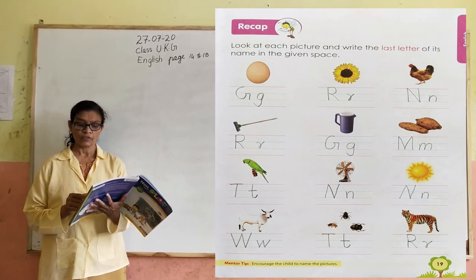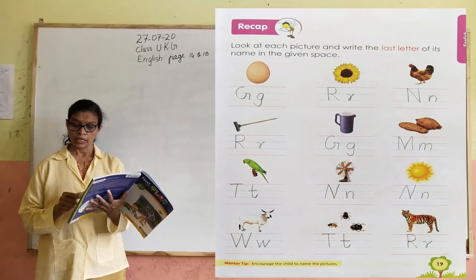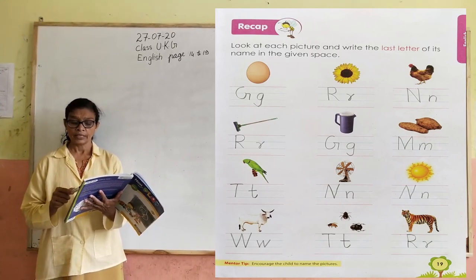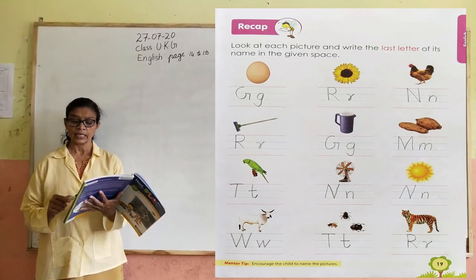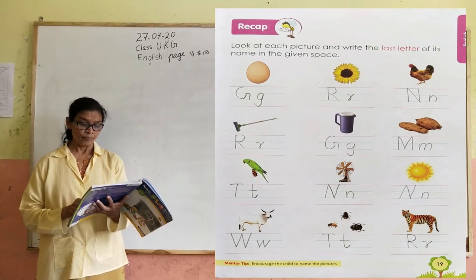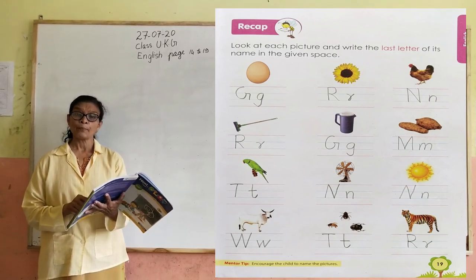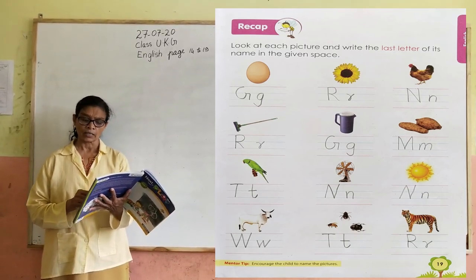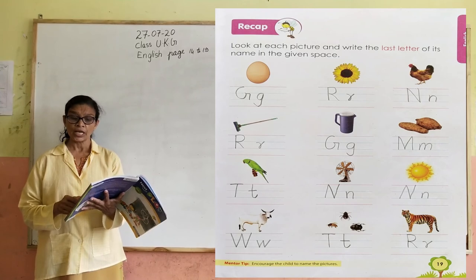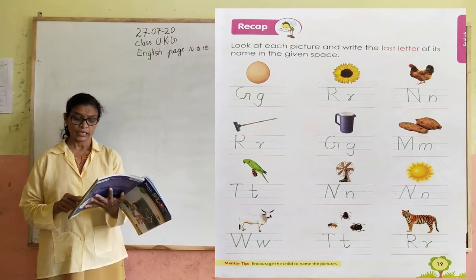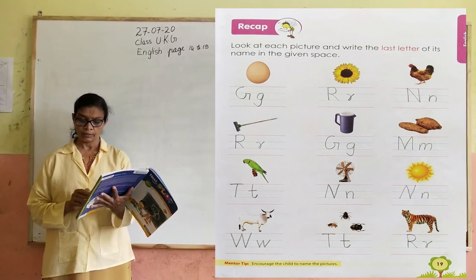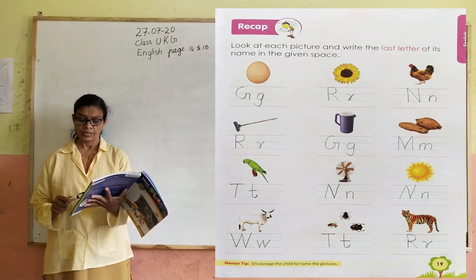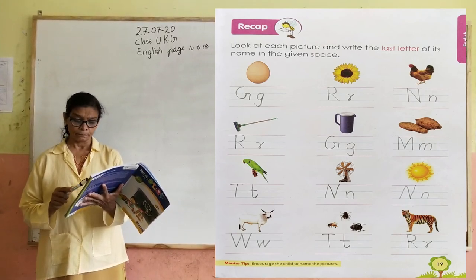Flower — last letter of flower is R. Hen — last letter of hen is N. Wiper — last letter of wiper is R. Yam — last letter of yam is M.